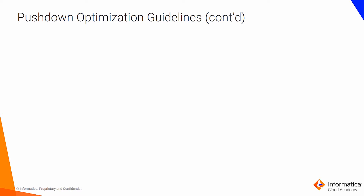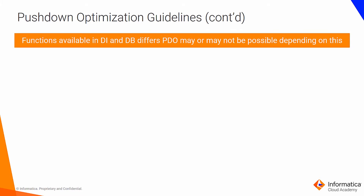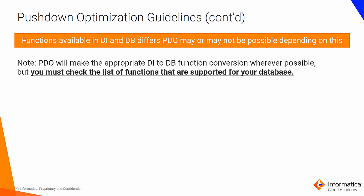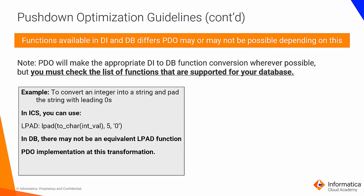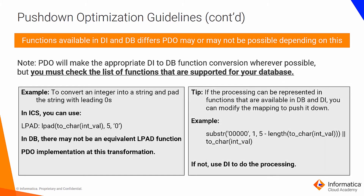Let us discuss how data integration to database function conversion happens when pushdown optimization is used. Functions available in DI and DB differ, so PDO may or may not be possible depending on this. PDO will make the appropriate DI-to-DB function conversion wherever possible, but you must check the list of supported functions for your database. For example, to convert an integer into a string and pad with leading zeros, in ICS you can use an LPAD function. In DB, there may not be an equivalent LPAD function. If the processing can be represented in functions available in both DB and DI, you can modify the mapping to push it down. If no equivalent function is available, use DI to do the processing.